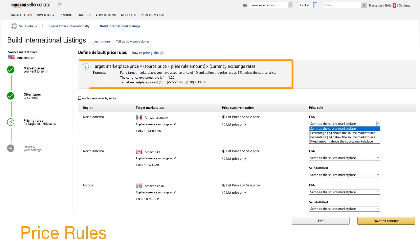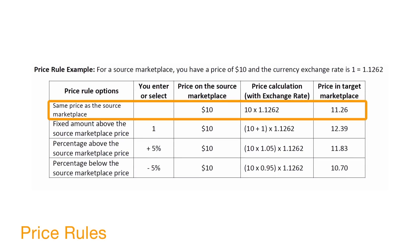Here are some examples. The target market price equals source price plus price rule amount, times currency exchange rate. Assuming your price is $10 on your source marketplace and the currency rate is 1 equals 1.1262: if you select 'same price as the source marketplace,' your offer price on the target marketplace is 11.26. If you enter 1, meaning to add $1 in fixed amount above the source marketplace price, the target marketplace offer price is 12.39.